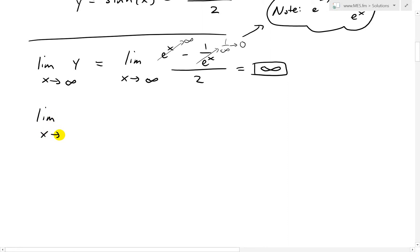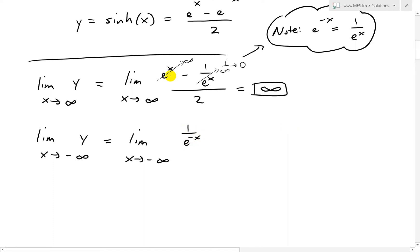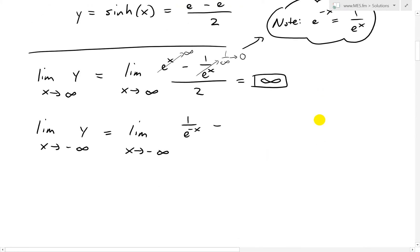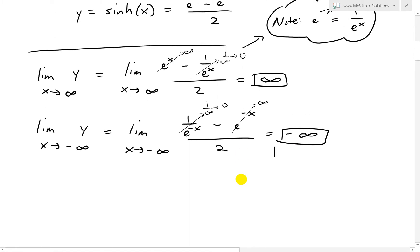Similarly, when we look at the limit as x approaches negative infinity of y, since we're dealing with a negative, I'll flip things over. We get 1 over e to the negative x minus e to the negative x over 2. The negatives cancel, giving us 0 minus infinity divided by 2. Since we have a minus, that's negative infinity. So from the left it goes to negative infinity, and on the right to positive infinity.